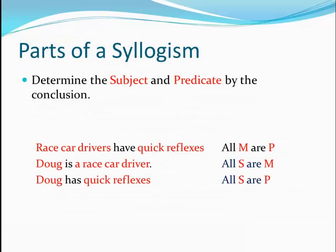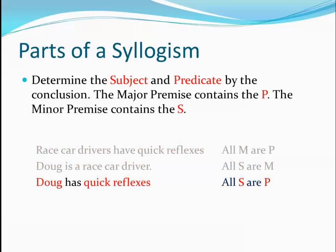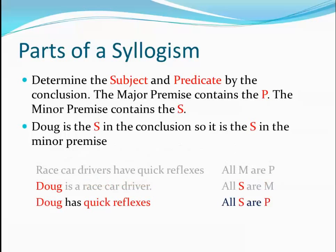Let's go over the parts of the syllogism in detail. To identify the subject, predicate, and middle terms, we look at the conclusion. The subject term of the conclusion must appear in the minor premise, and the predicate term of the conclusion must appear in the major premise. In this example, 'Doug has quick reflexes' is an A claim and serves as the conclusion. Doug is the subject of the conclusion, and must appear in either the subject or predicate position of the minor premise, the second premise.